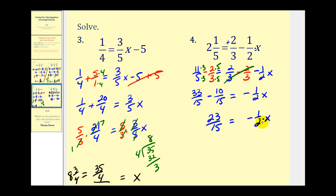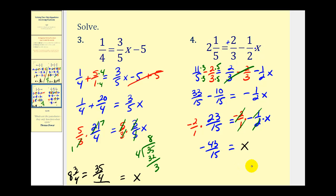Simplifying the left side: thirty-three-fifteenths minus ten-fifteenths equals twenty-three-fifteenths. So we have 23/15 = -1/2 x. The negative one-half is attached by multiplication, so instead of dividing by negative one-half, we multiply both sides by the reciprocal, which is negative two over one. On the left, nothing simplifies, so we get negative forty-six-fifteenths. On the right, negative two over negative two simplifies to one, leaving just x. This is an improper fraction. Converting: forty-three divided by fifteen goes two times with a remainder of thirteen, so x equals negative two and thirteen-fifteenths. That'll do it for this video — I hope you found these examples helpful.